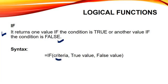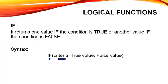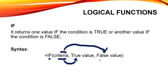Our first argument is our criteria or the condition. Our second argument is the true value. And our third argument is the false value. With the IF condition we have to pass a condition. If this given condition is true, then our function will directly move to the true part and it will skip the false part. But if this criteria is false, it will directly jump to the false part and it will skip the true part. So it means it has three arguments but at a time it can only work with two arguments.